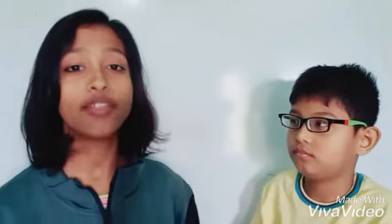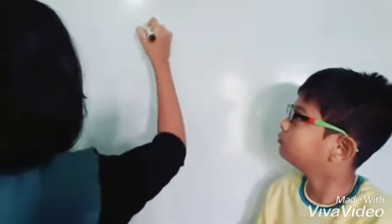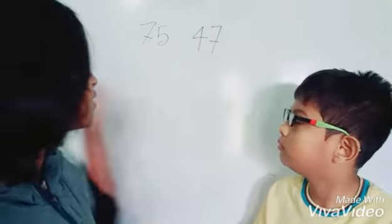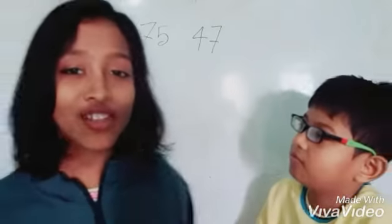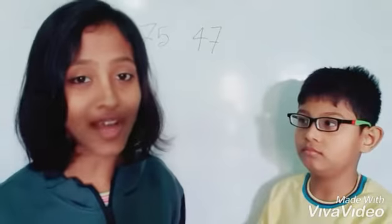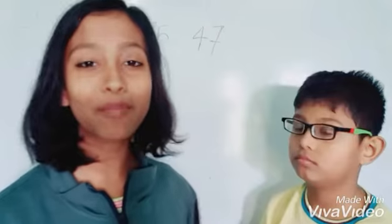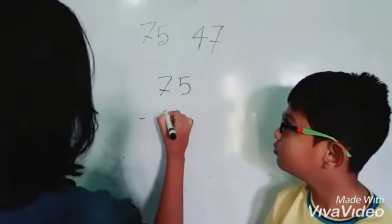Now, let's think about a problem. You have 75 storybooks and your friend Raja has 47 storybooks. The question is, how many more or less storybooks do you have than your friend Raja? Look at the figure. Which one is bigger, 75 or 47? 75. So obviously, you have more books than your friend Raja. But the question is, how many more and how to calculate it? At first, write the mathematical sentence: 75 minus 47.